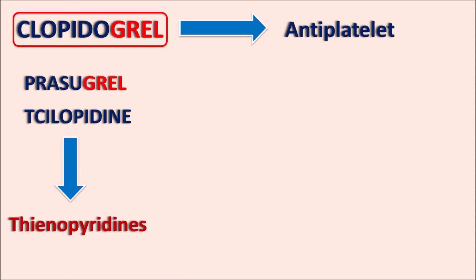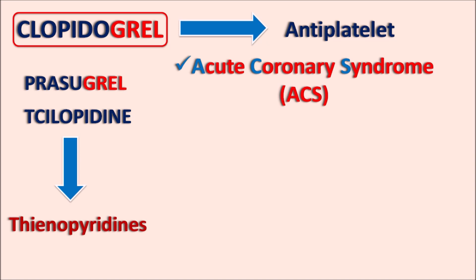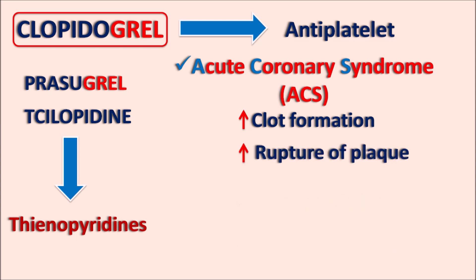Clopidogrel can be indicated in conditions like acute coronary syndrome (ACS). This is a cardiovascular disorder where there is increased clot formation which reduces coronary blood flow. ACS is mostly associated with increased rupture of plaque formed by LDL cholesterol and platelets. In such conditions, clopidogrel is given along with other drugs to reduce clot formation and platelet aggregation.